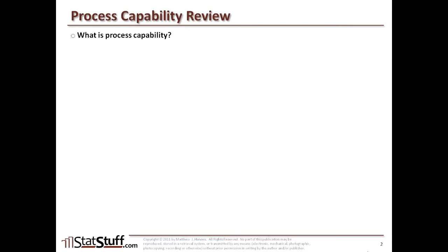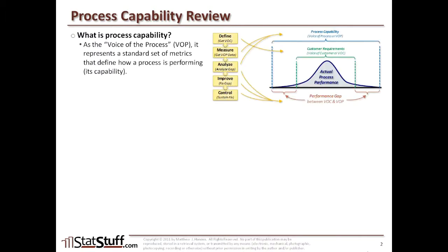Process capability refers to the voice of the process, or VOP, representing the standard set of metrics you might use to define how a process is performing, or the capability of that process. If we have a distribution of actual process performance, and in the define phase we understand the voice of the customer, or VOC, the customer defines requirements or expectations. We outline those based on the lower spec limit and upper spec limit, and anything within that portion refers to something that's good, something the customer is willing to pay for, the value added.